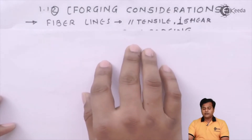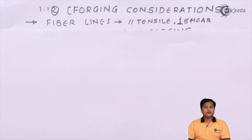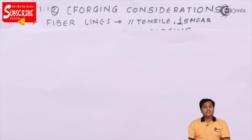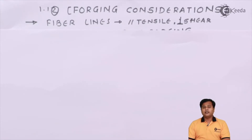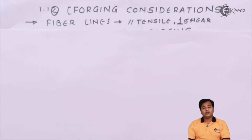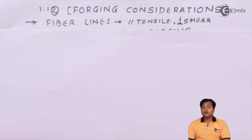The first consideration is fiber lines. When forging is done, the material — the molten material — solidifies. All the particles of the material are oriented in such a manner that they create fine fiber lines. These fine fiber lines are very important because this is how the different molecules of the material are connected with each other. The strength of the material or the strength of the molecules depends upon the fiber lines.